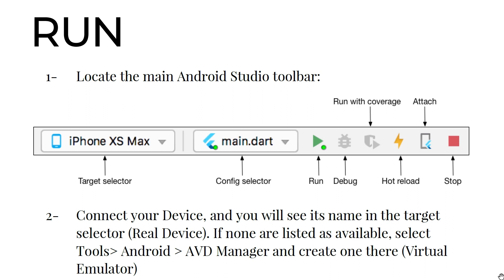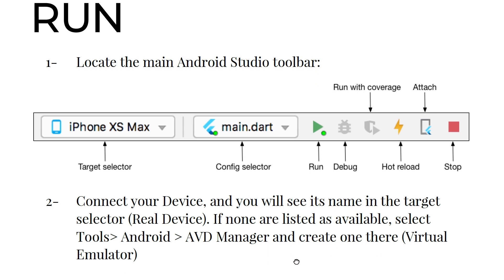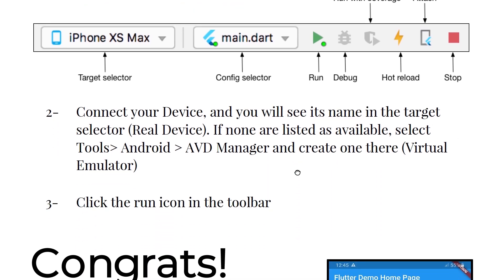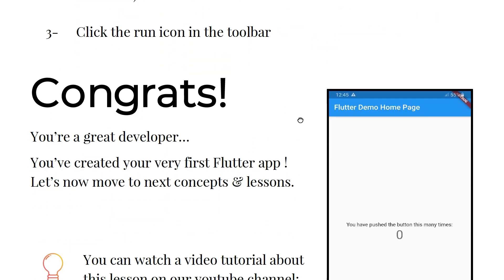Now let's run the app. Locate the main Android Studio toolbar — it contains the target selector, configuration selector, Run, Debug, Run with Coverage, Hot Reload, Attach, and Stop buttons. Connect your device or an AVD (Android Virtual Device). We'll see how to configure virtual devices later.